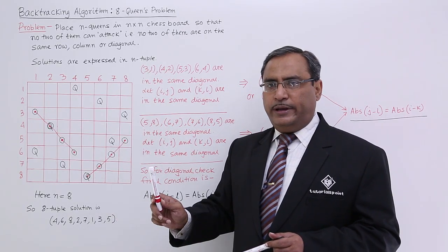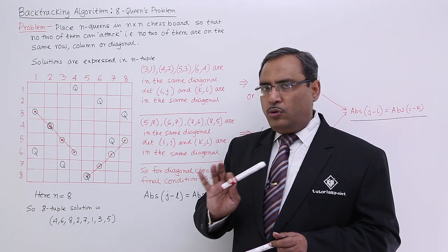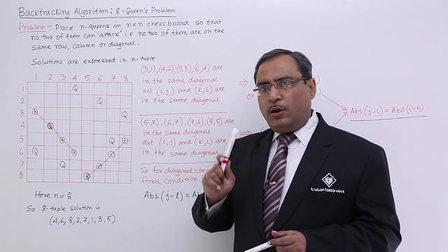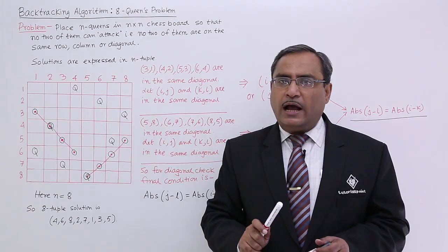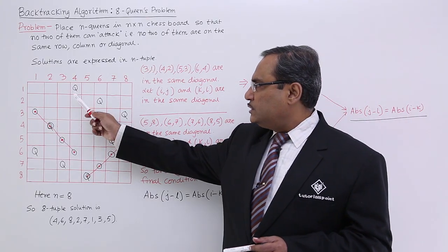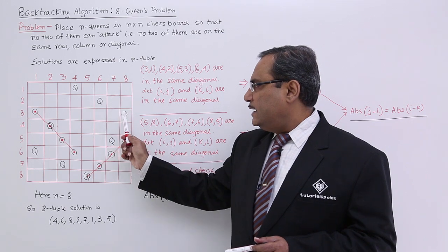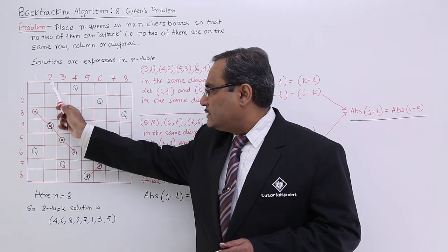As the ith queen will be at the ith row always, I shall be keeping only the column number for the ith queen. So that is why here the solution is 4 6 8, 4th queen at the second column.